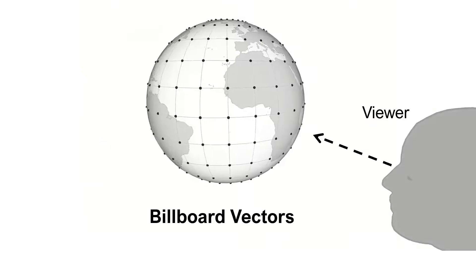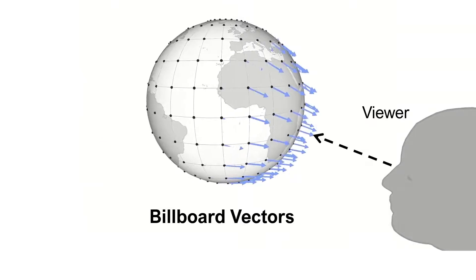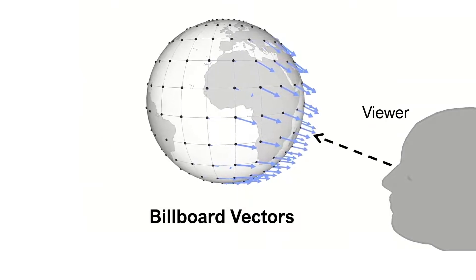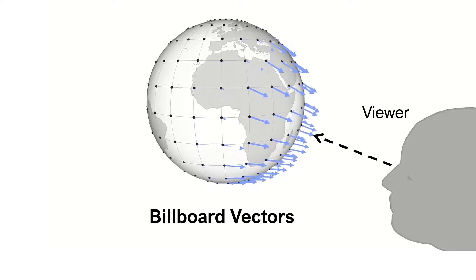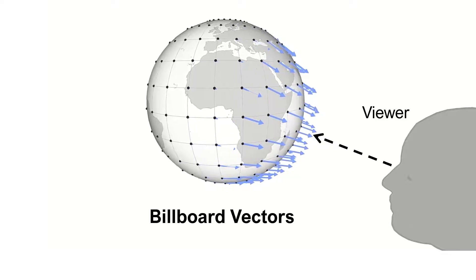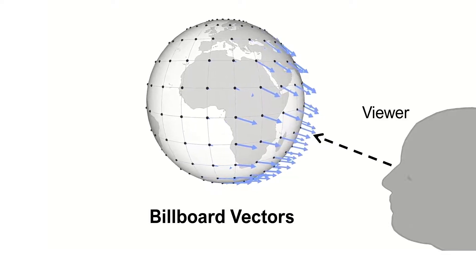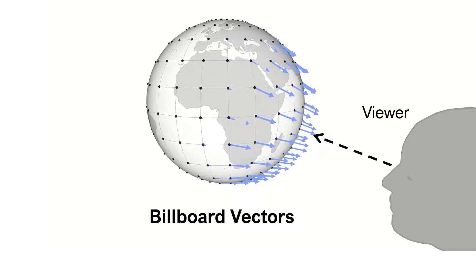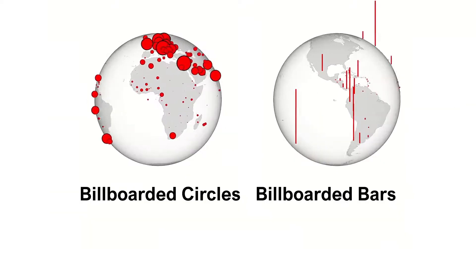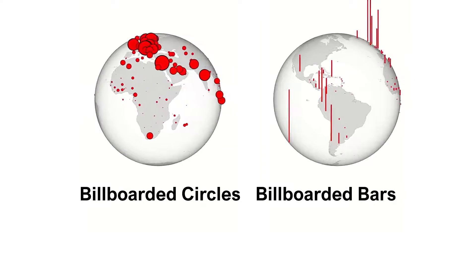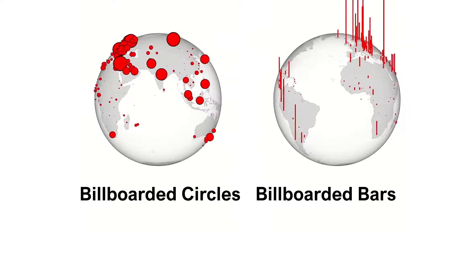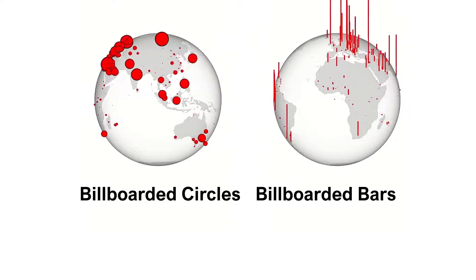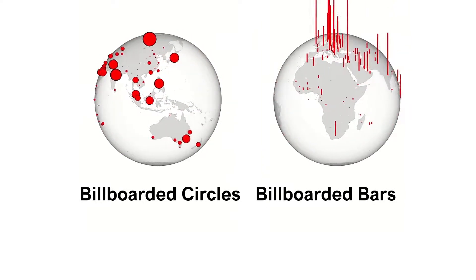We could also use billboard vectors that always point to the viewer regardless of globe rotation. Billboarded circles and billboarded bars are two visualization idioms using billboard vector directions.